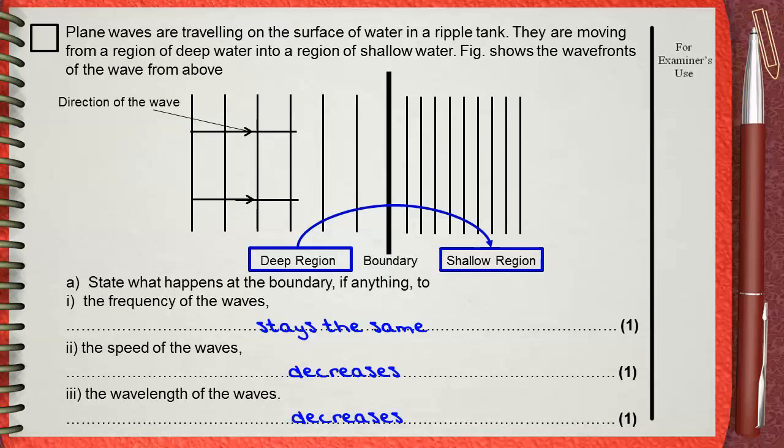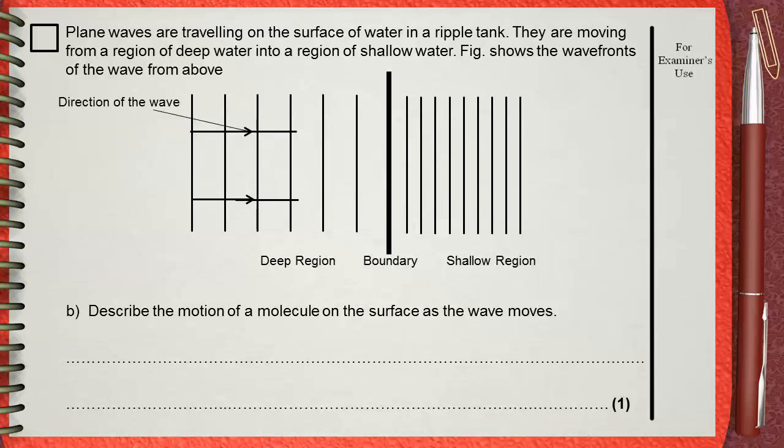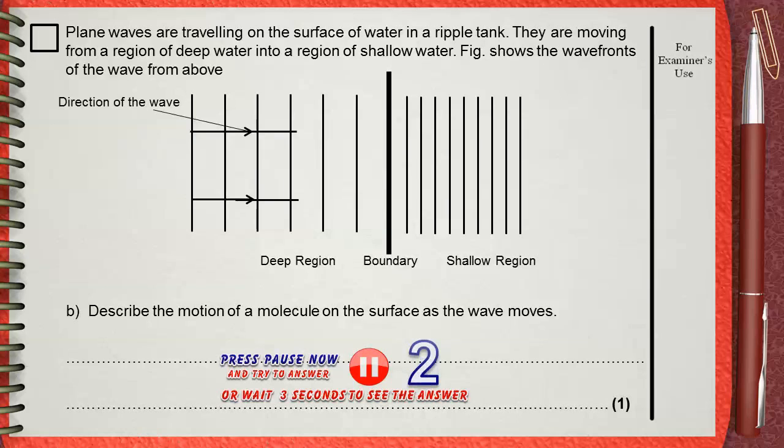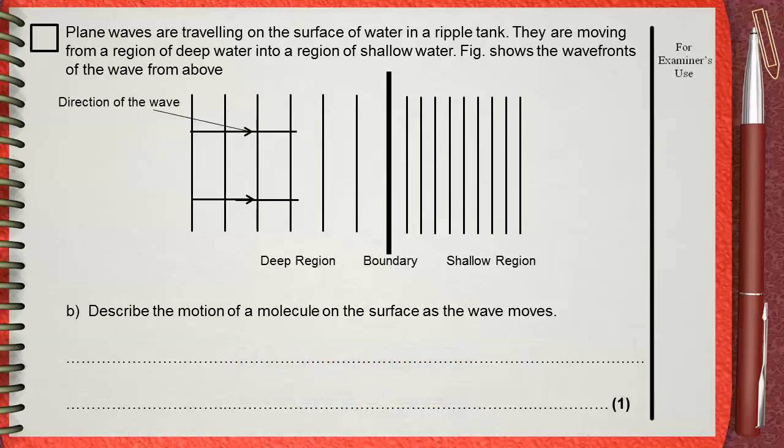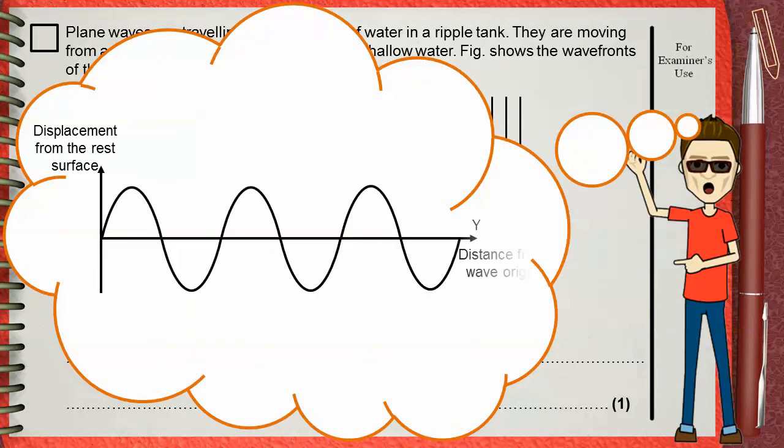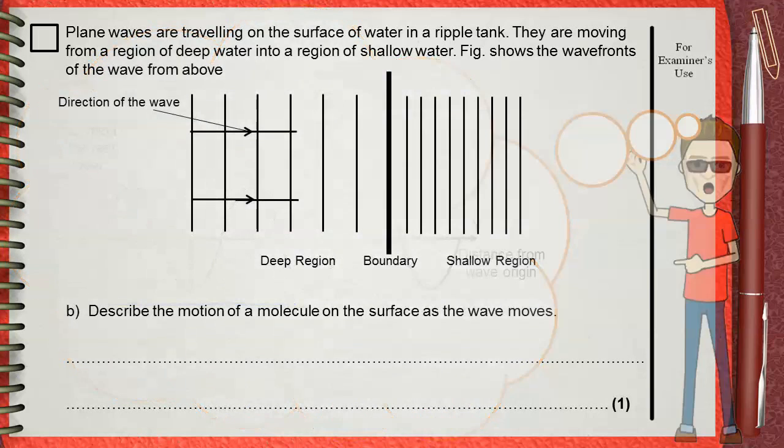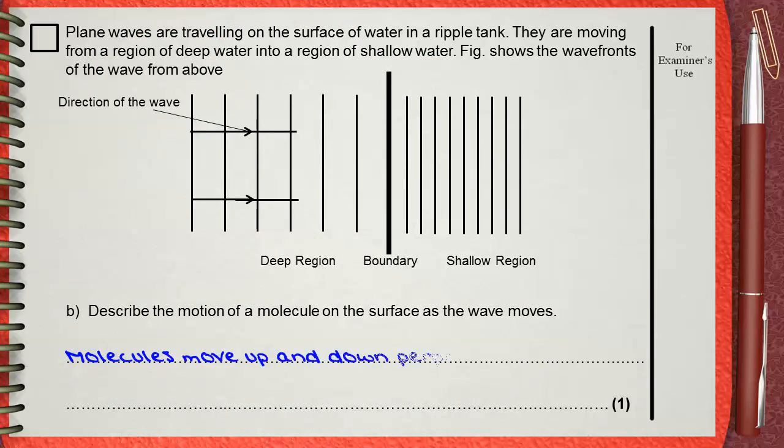Question B. Describe the motion of a molecule on the surface as the water moves. We know that water waves are transverse waves. So if water moves as shown, moving from left to right for example, this means that the surface of the water will move up and down, perpendicular to the direction of the wave. The answer will be molecules move up and down, perpendicular to the direction of wave propagation.